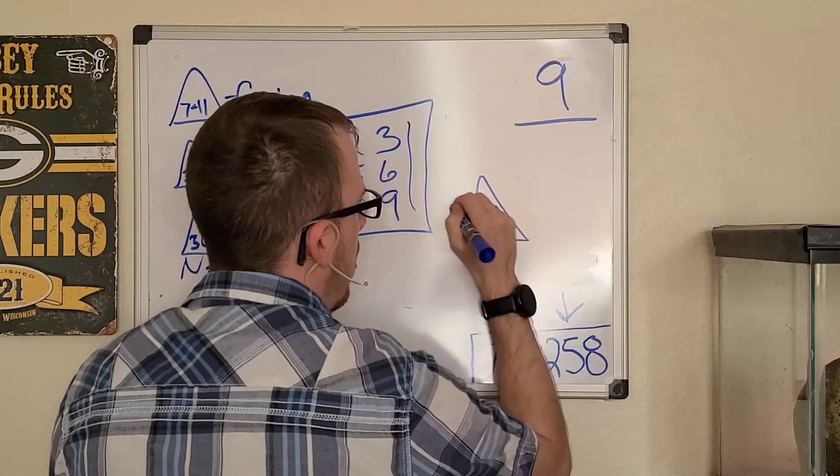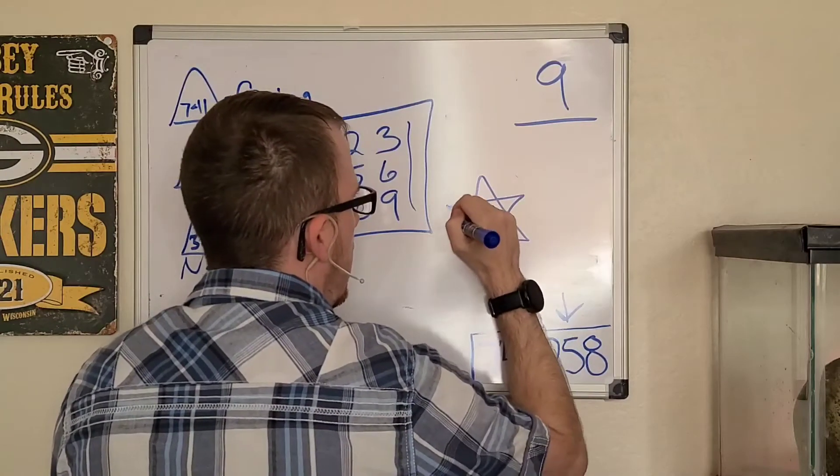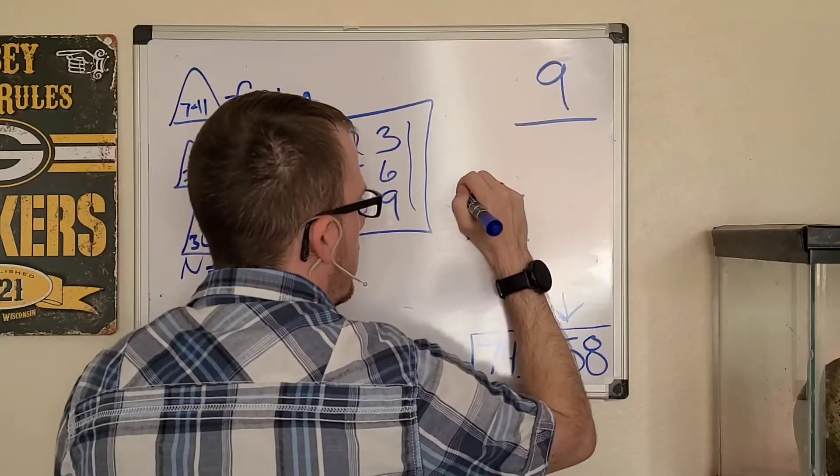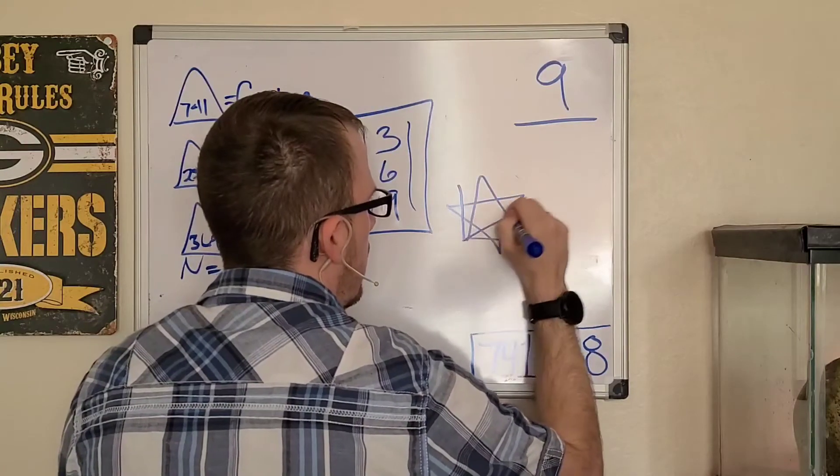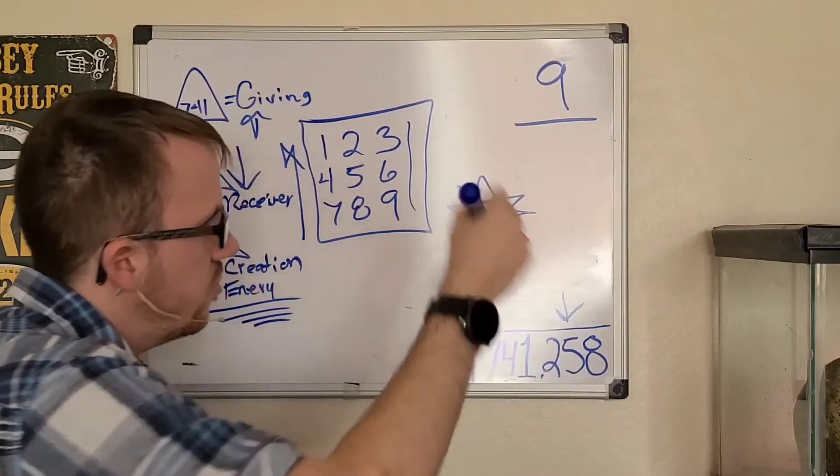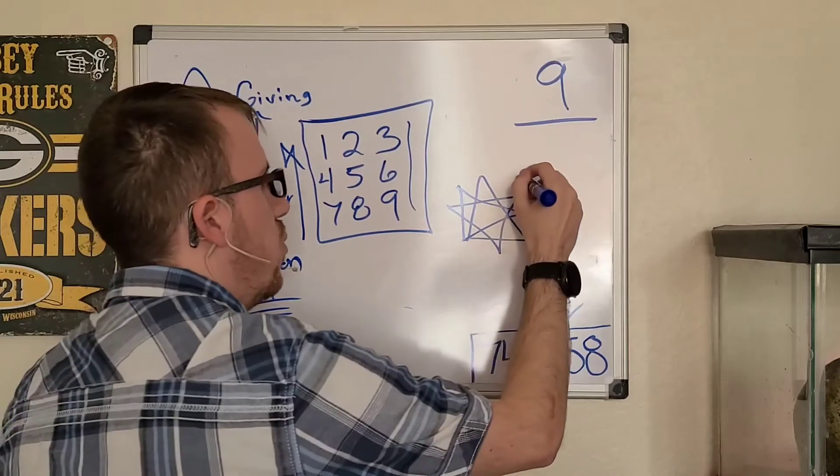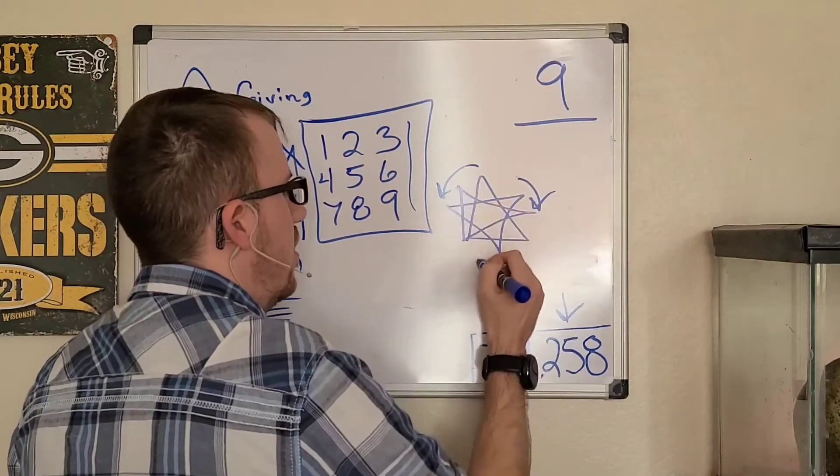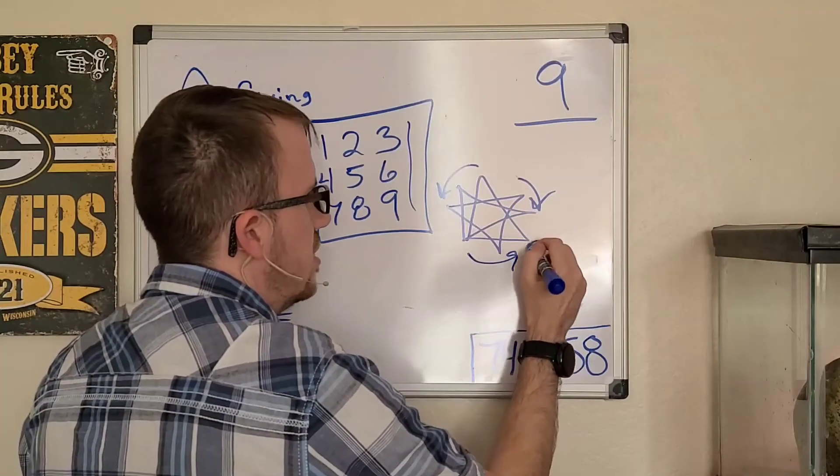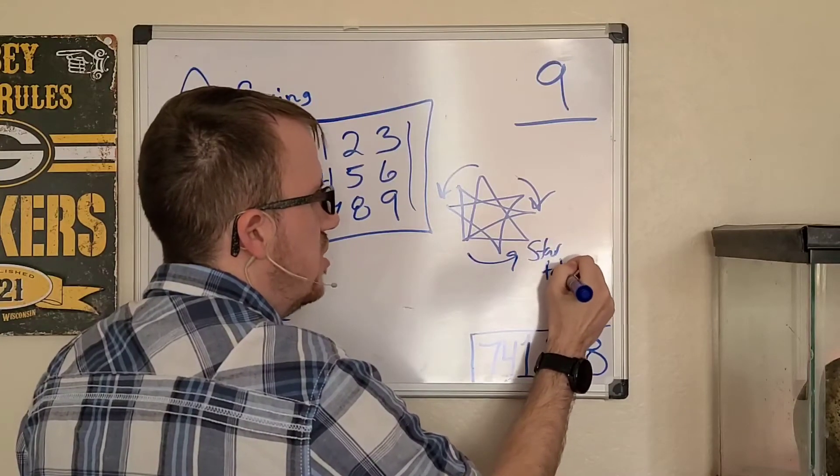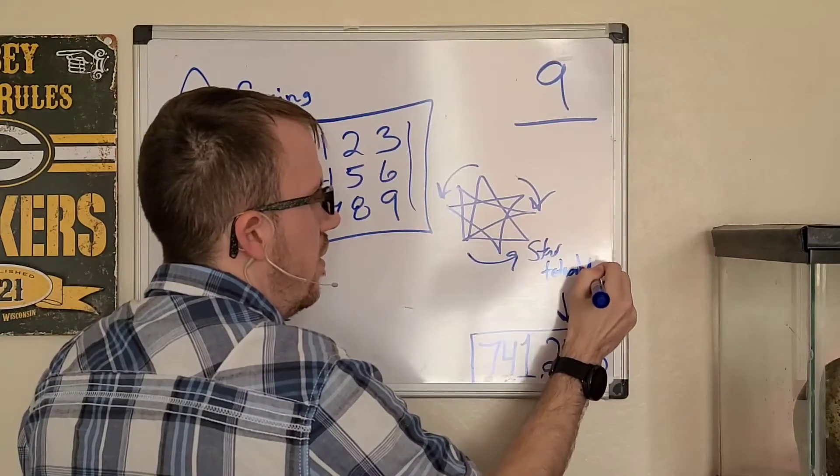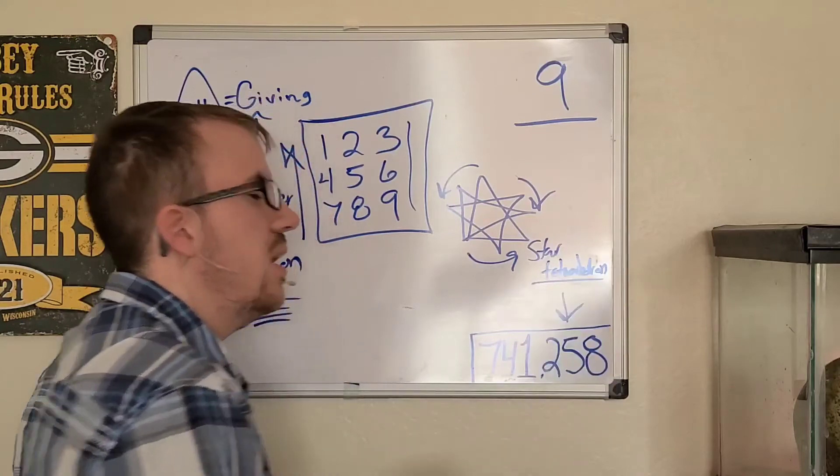So if you were to draw - I'm not the greatest at this - three triangles on top of each other and they were to rotate in a certain pattern, you would end up with a star tetrahedron.